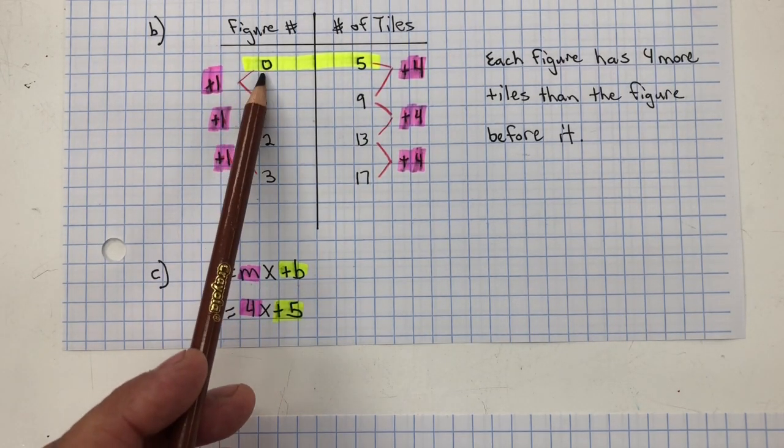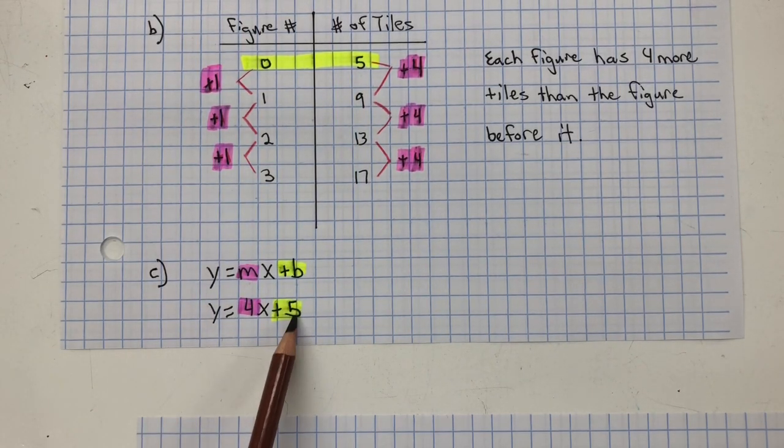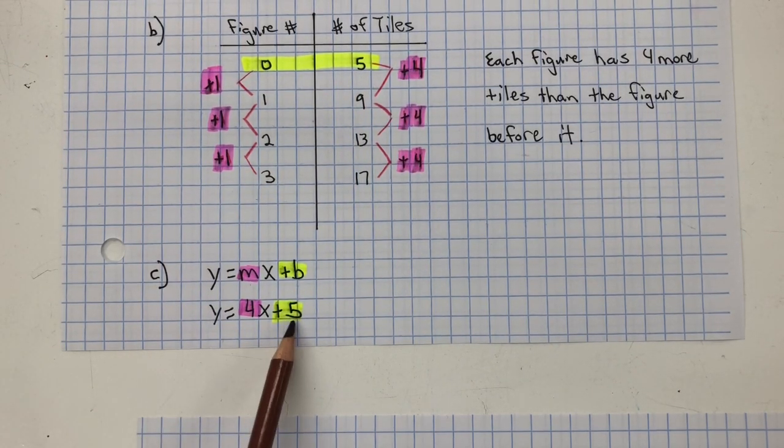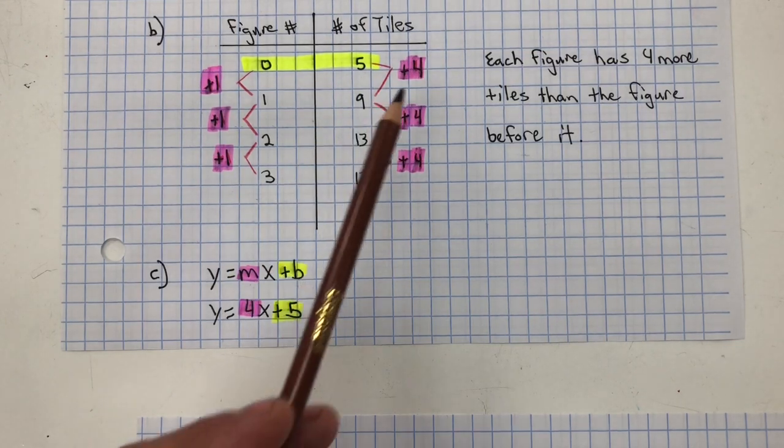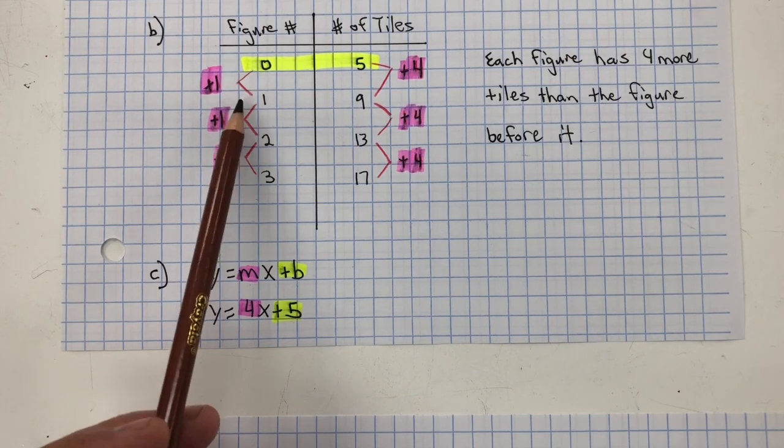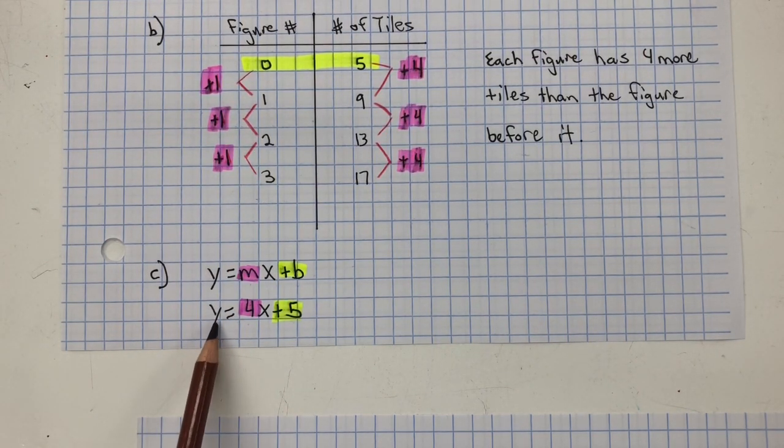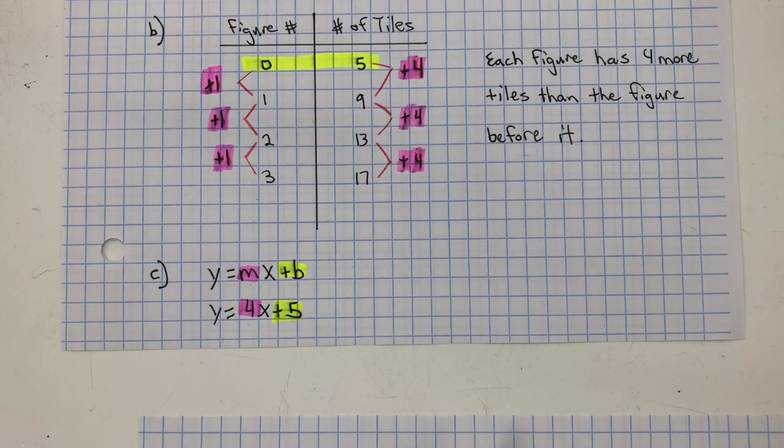For figure zero, that's what we started with. We had five tiles. There's our initial value, what we started with, and its growth rate, it's growing by four tiles for every one figure number. So that's where the four comes in. So Y equals 4X plus 5.